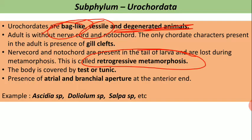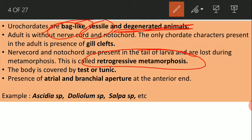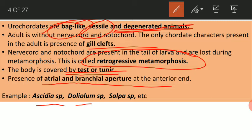The covering of their body is a test or tunic, and they have gill slits. They have atrial and branchial apertures at their anterior end of the body, and these apertures are important for respiration. Examples are Ascidia, Doliolus, and Salpa.